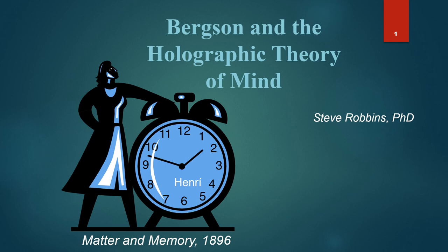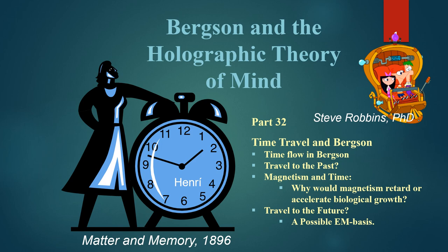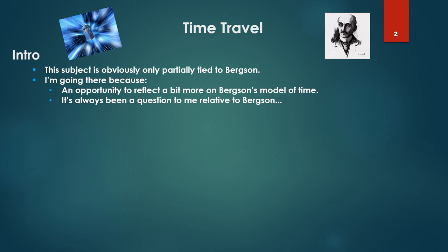All right, back again to Bergson and the Holographic Theory of Mind. This will be part 32 on time travel and its relation to Bergson. We'll be looking at Bergson's model of time one more time, time flow in Bergson, understand its implication for travel in any direction, particularly in this case travel to the past, and we'll be exploring the subject of magnetism and time.